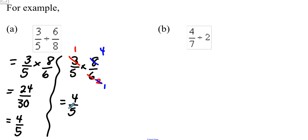Now for the example in B, it might be a little bit more difficult to see what the reciprocal of 2 is, but remember 2 can be written as 2 over 1. So if we rewrote that as a multiplication problem, we would end up with 4 over 7 times 1 over 2.